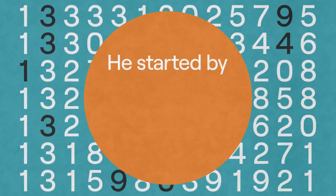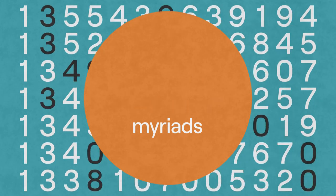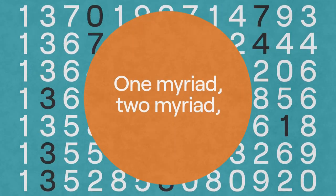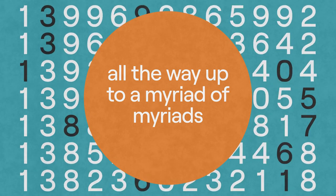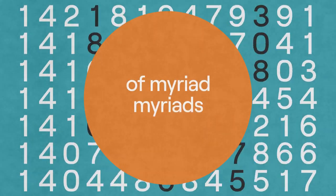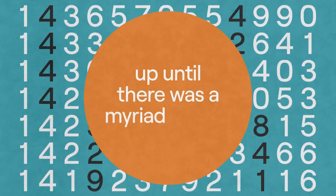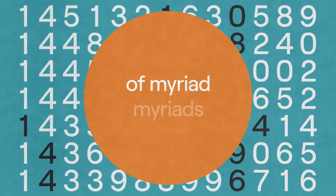He started by counting numbers of myriads, one myriad, two myriad, all the way up to a myriad of myriads. And then he started counting multiples of myriad myriads, up until there was a myriad myriad of myriad myriads.